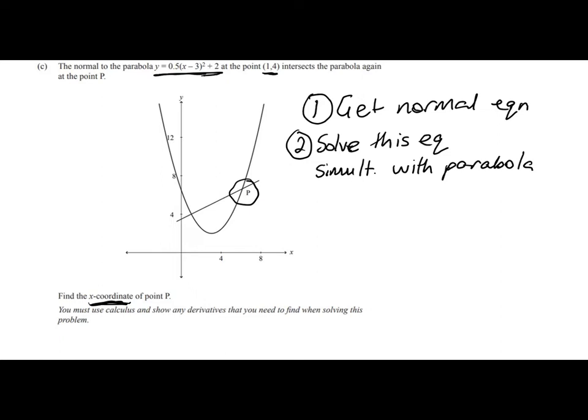And then step 2 is to solve this equation simultaneously with the parabola. So I'm going to go through both those steps on the next slide. Make sure that you've got a picture in your head or preferably in your book of what we're trying to do, because it's going to make the question make more sense. In particular, we can look at that point P, and we can see that the answer is going to be somewhere in between 4 and 8. Okay, so we want to make sure that that's what we end up with. All right, so step 1, finding the normal equation.